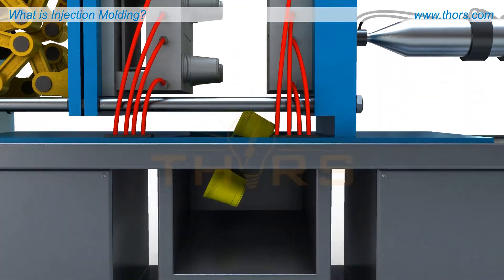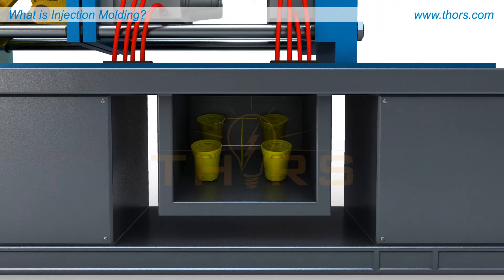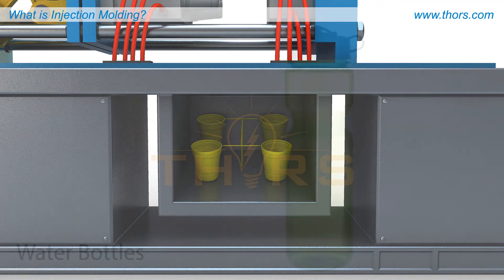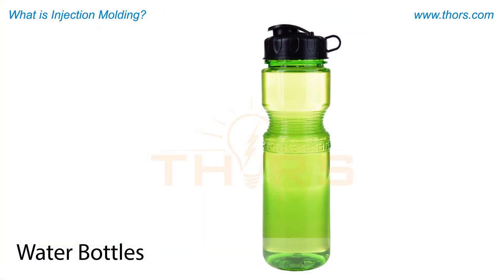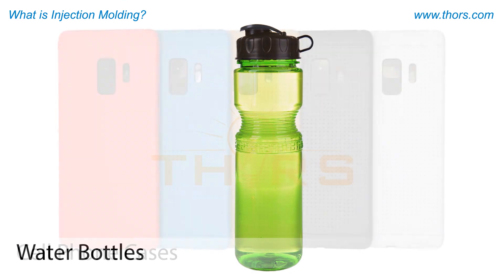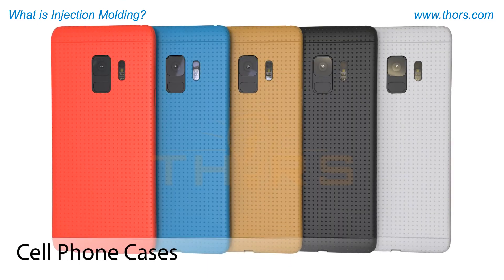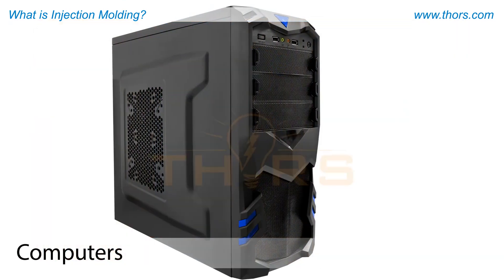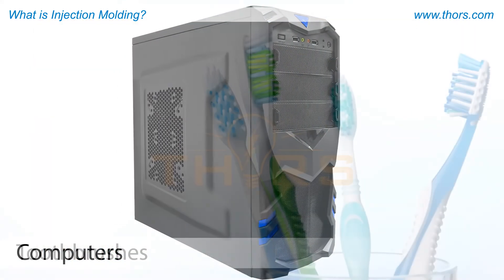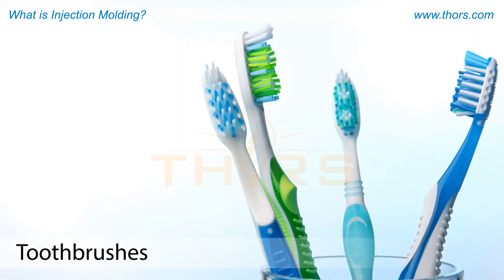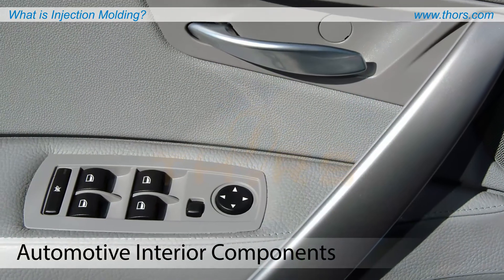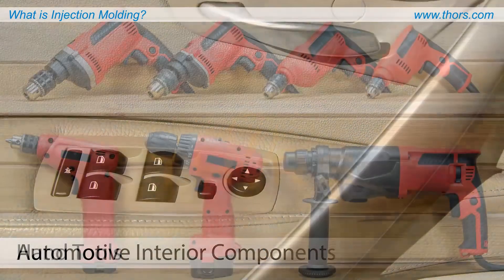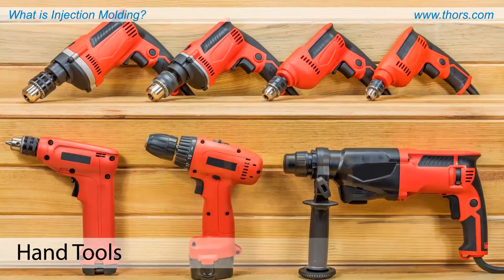Today, common examples of injection molding include water bottles, cell phone cases, computers, toothbrushes, automotive interior components, and hand tools.